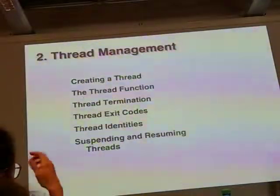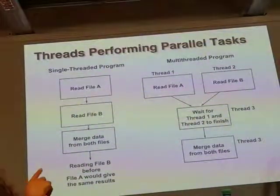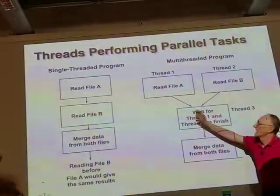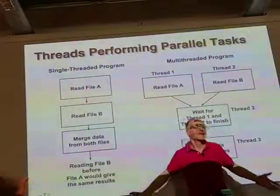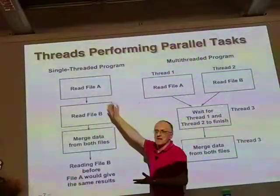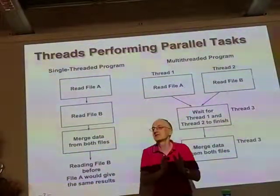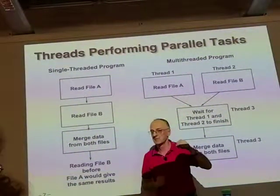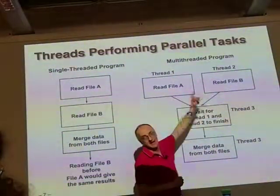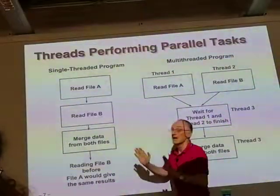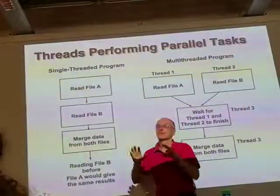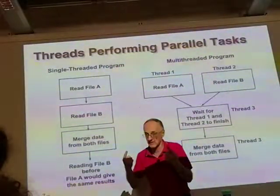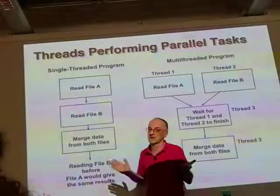If the two files have different formats, you write two different functions — read A and read B — and one thread executes read A while another executes read B. Or if they contain the same type of data, like a list of students, both threads execute the same function but on different files. It depends on the application.